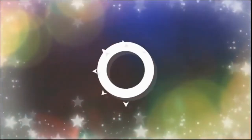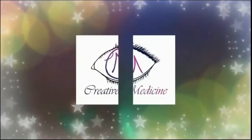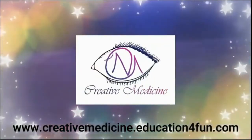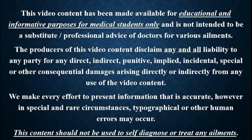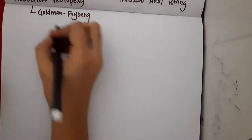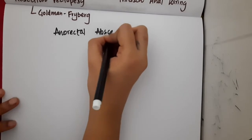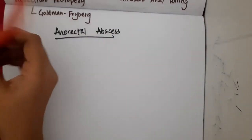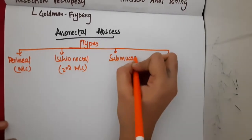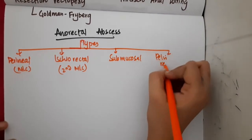Welcome to Creative Medicine. In this lecture we will learn about anorectal abscess. Anorectal abscesses are mainly of four types: first, perianal abscess, which is the most common; second, ischiorectal abscess, which is the second most common; followed by submucosal abscess; and then pelvirectal abscess.